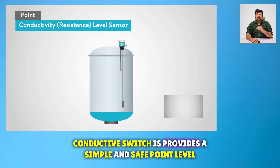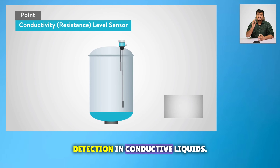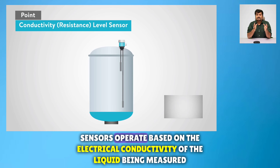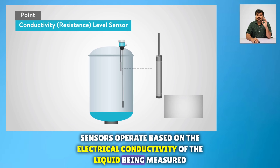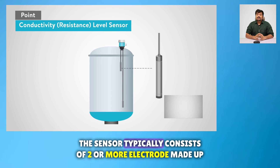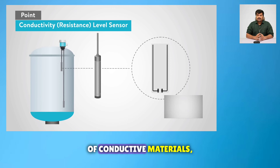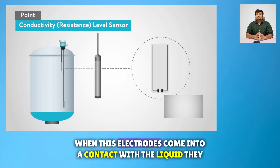Conductive switches provide a simple and safe point level detection in conductive liquids. The main working principle is that conductivity level sensors operate based on the electrical conductivity of the liquid being measured. The sensor typically consists of two or more electrodes made of conductive materials. When these electrodes come into contact with the liquid, they complete an electrical circuit.